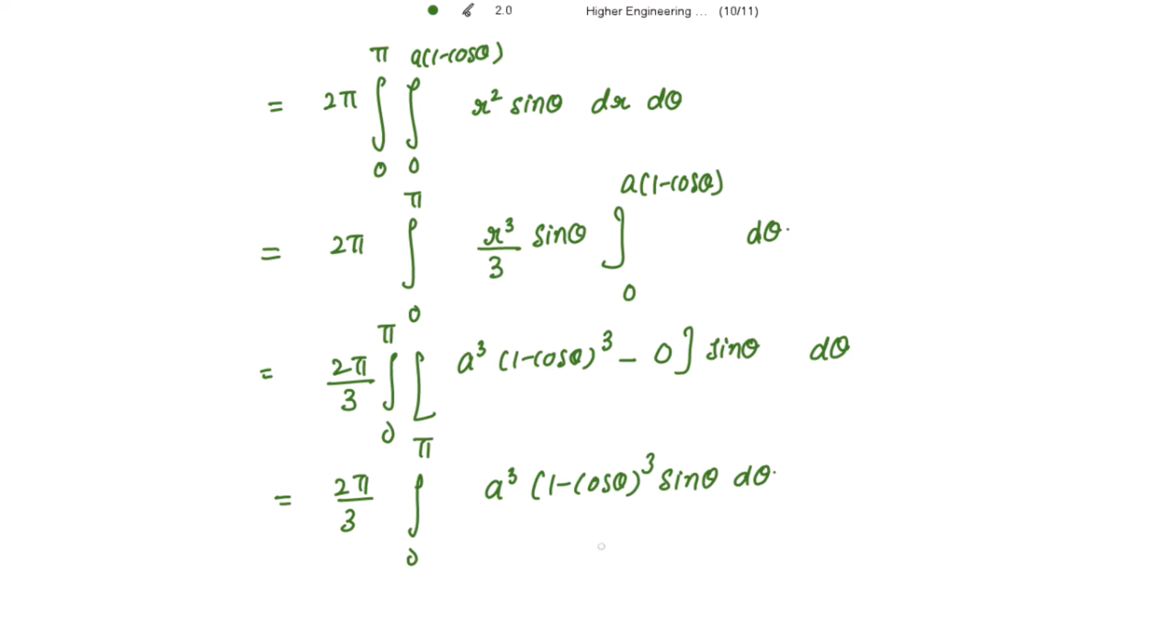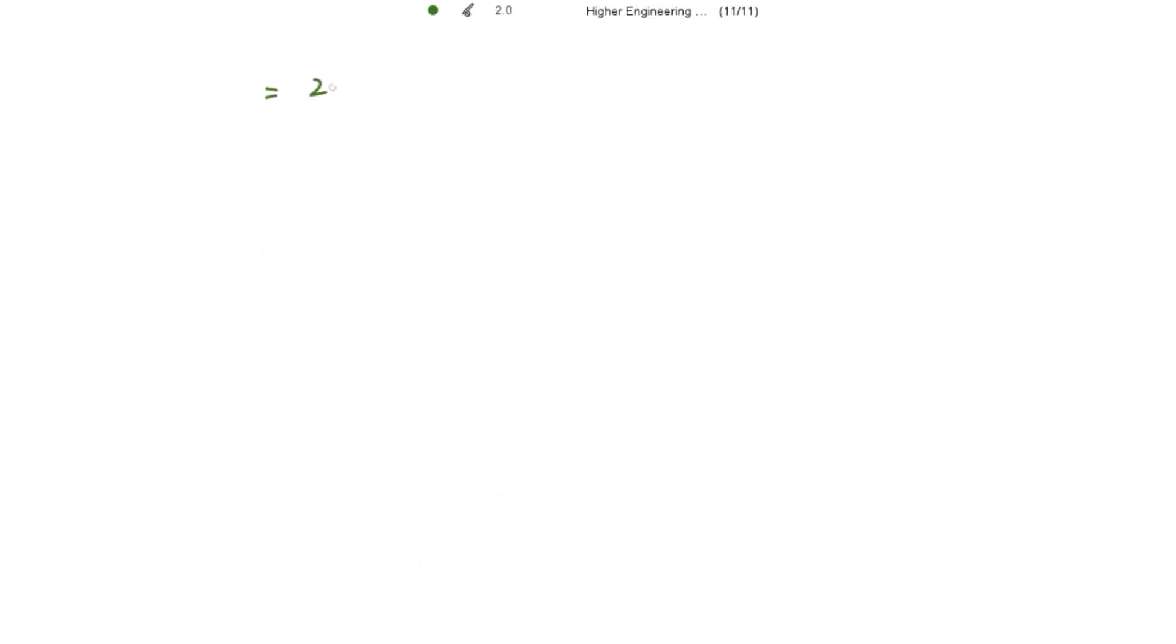So just integrating this simply as taking a cube outside. So this is 2 pi a cube over 3 and this becomes 1 minus cos of theta power 4 over 4 from 0 to pi.